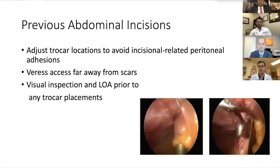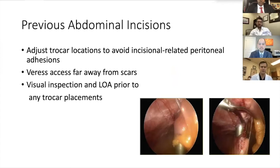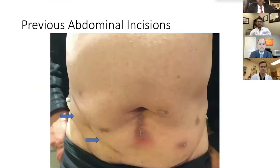If there are lots of adhesions, use your laparoscopic skills to take down those adhesions — we don't want any through-and-through bowel injuries. Here's a case presented to me: a patient had previous abdominal surgery, an appendectomy, and so our trocars took into consideration those previous surgeries.